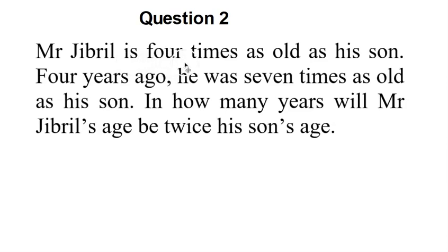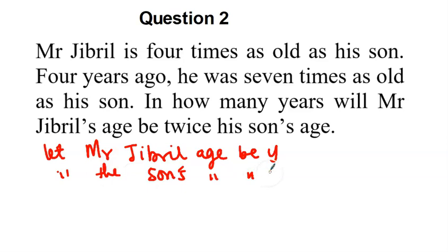Let's look at the question. Mr. Jabril is four times as old as his son. Four years ago he was seven times as old as his son. In how many years will Mr. Jabril's age be twice his son's age? First of all, let Mr. Jabril's age be y and then let the son's age be x.